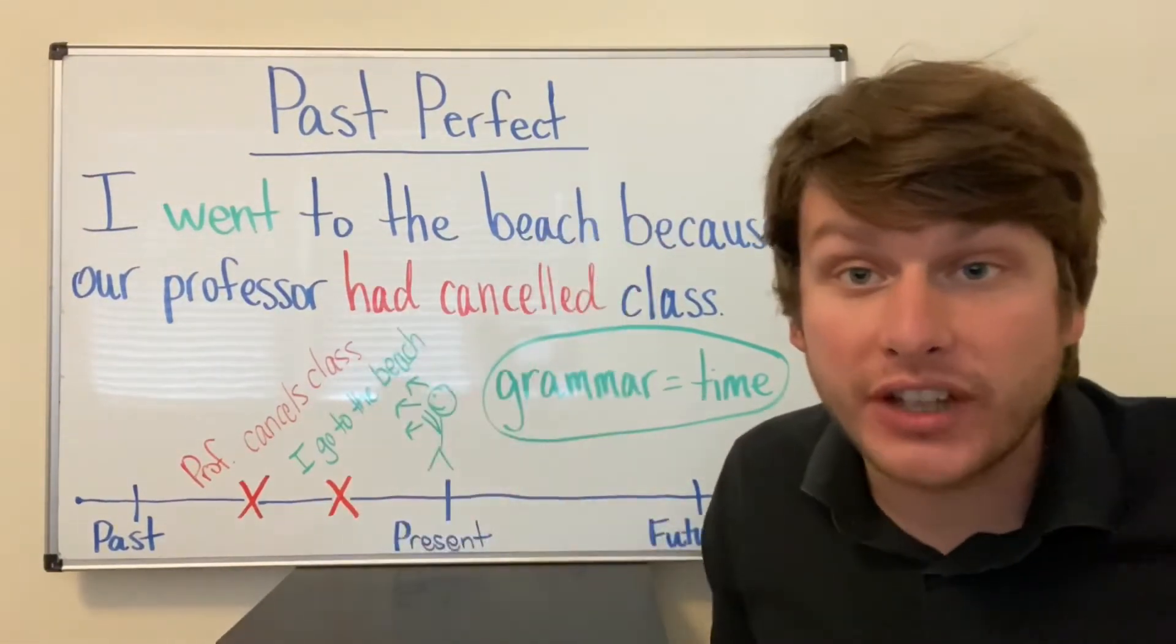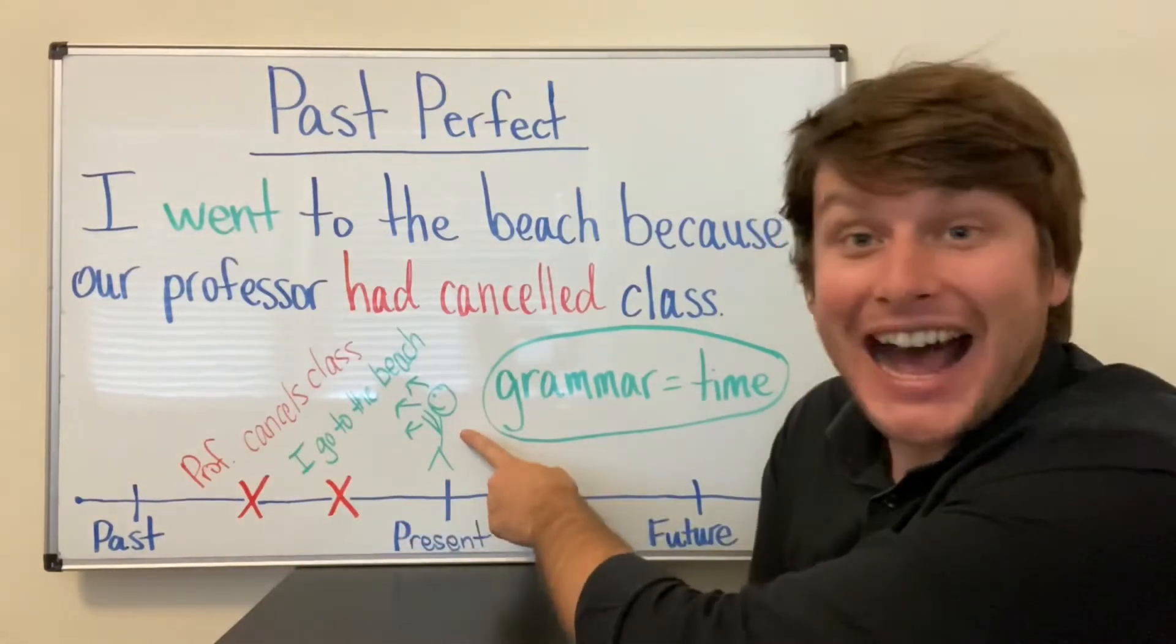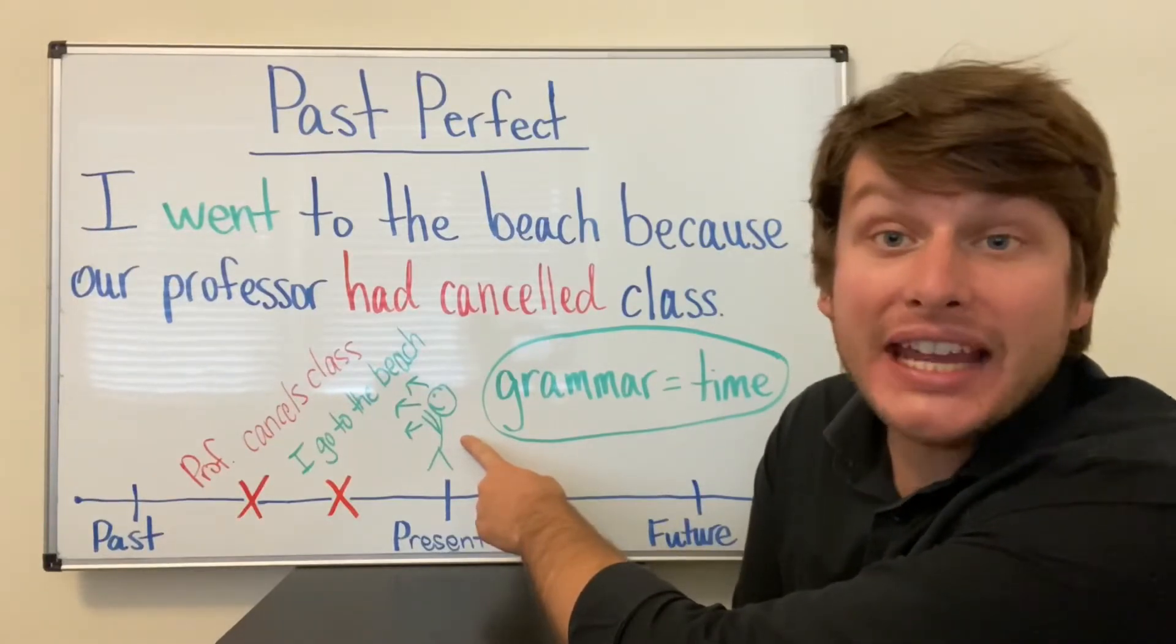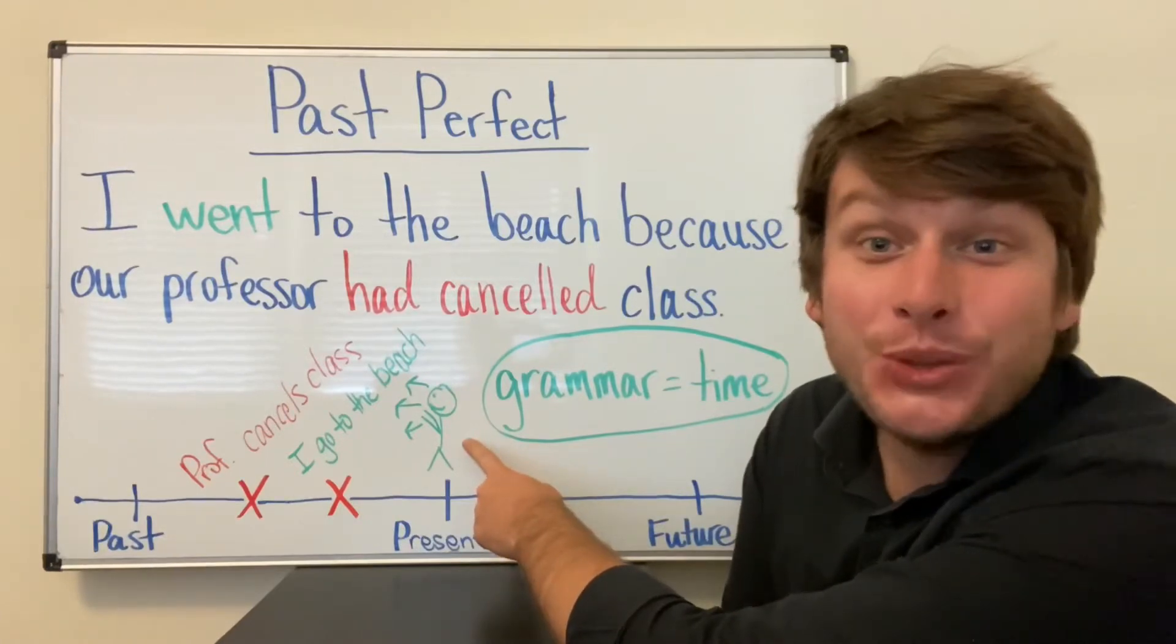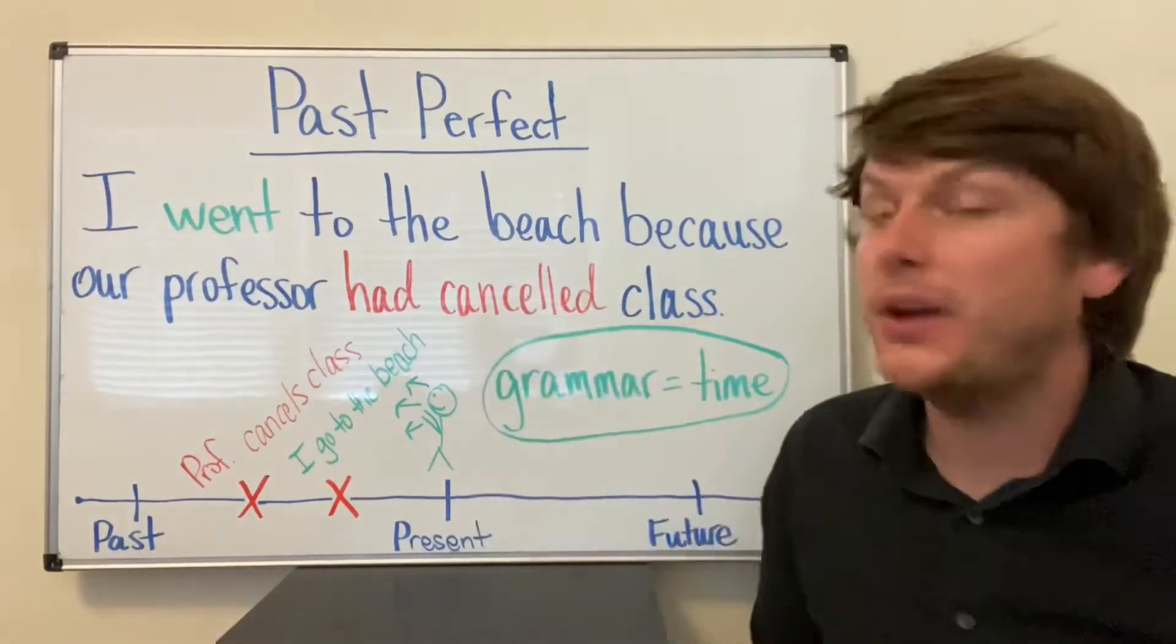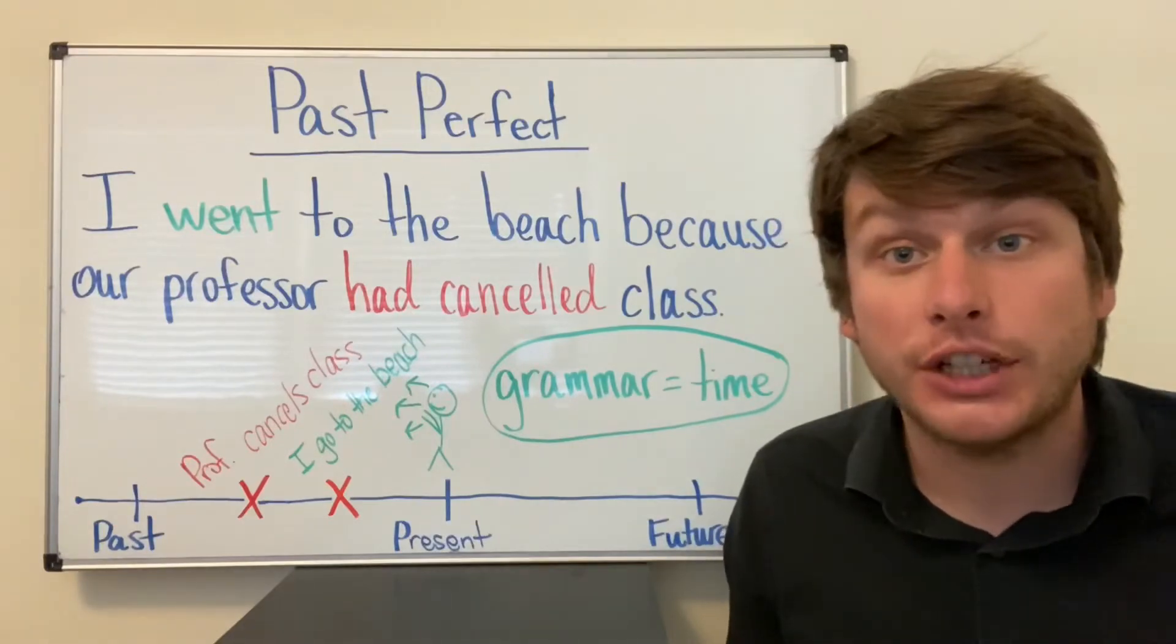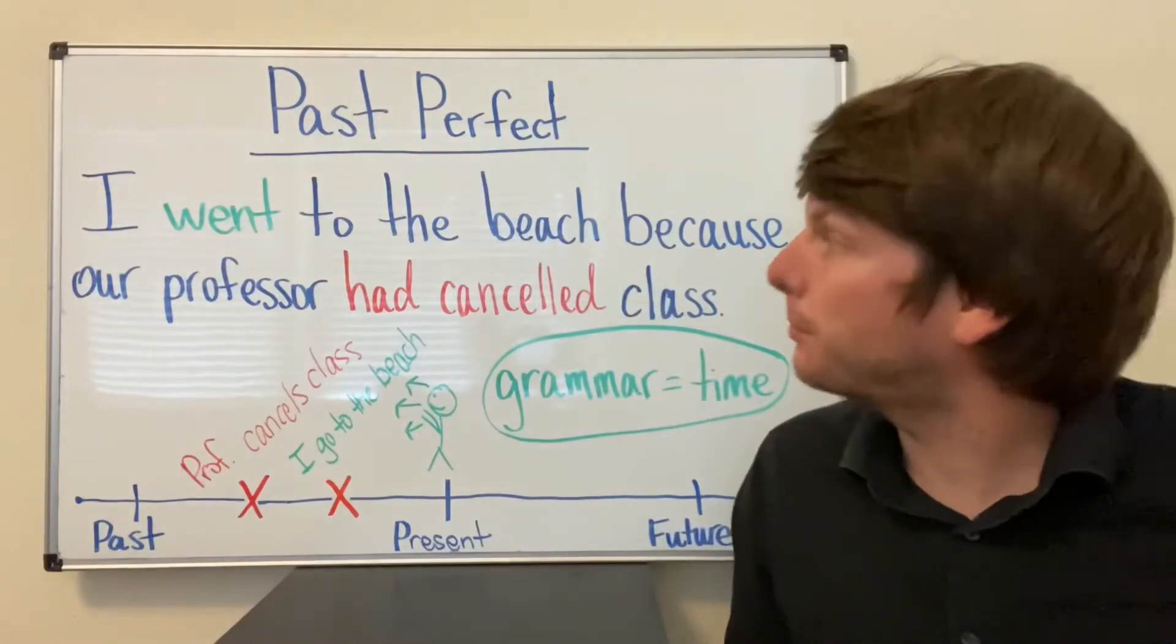These two events occurred in the past, but I am in the present right now. I cannot go back in the past. I am in the present, and I am discussing two things that happened in the past. So in order to signal to my audience which event occurred before the other, I use the Past Perfect.